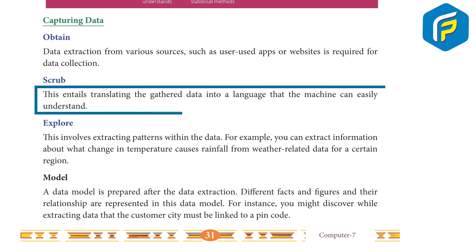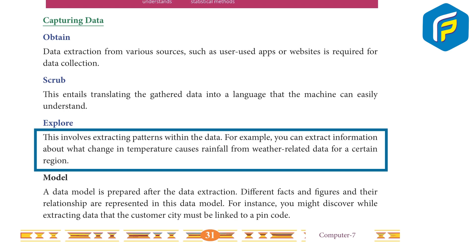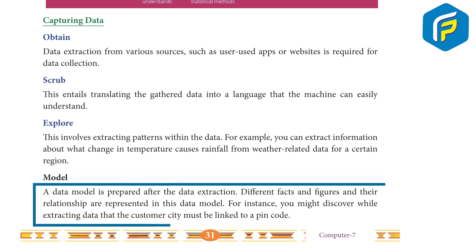Capturing data — obtain: data extraction from various sources such as user apps or websites is required for data collection. Scrub: translating the gathered data into a language the machine can easily understand. Explore: this involves extracting patterns within the data — for example, extracting information about what change in temperature causes rainfall from weather-related data. Model: a data model is prepared after data extraction; different facts, figures, and their relationships are represented in this data model — for instance, a customer's city must be linked to a pin code.